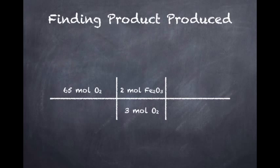Lastly, I multiply 65 by 2 and divide it by 3 to get 43.33 moles of iron oxide, which is made from the products given.